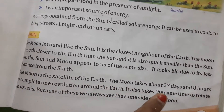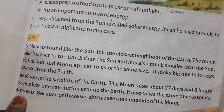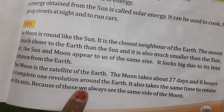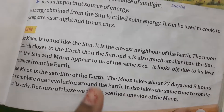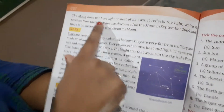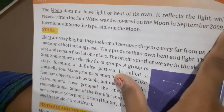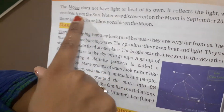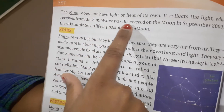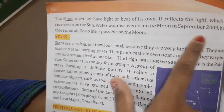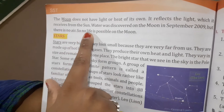The moon also takes the same time to rotate on its own axis. Because of this, we always see the same side of the moon. The moon does not have heat or light of its own — it reflects the light it receives from the sun. Water was discovered on the moon in September 2009, but there is no air, so no life is possible on the moon.